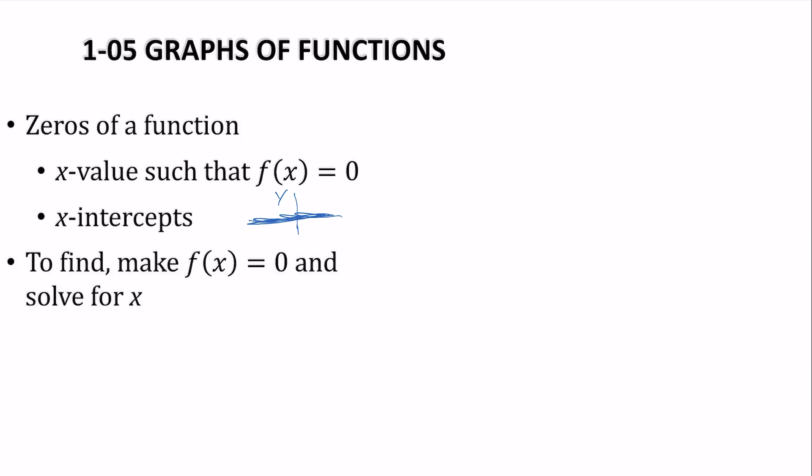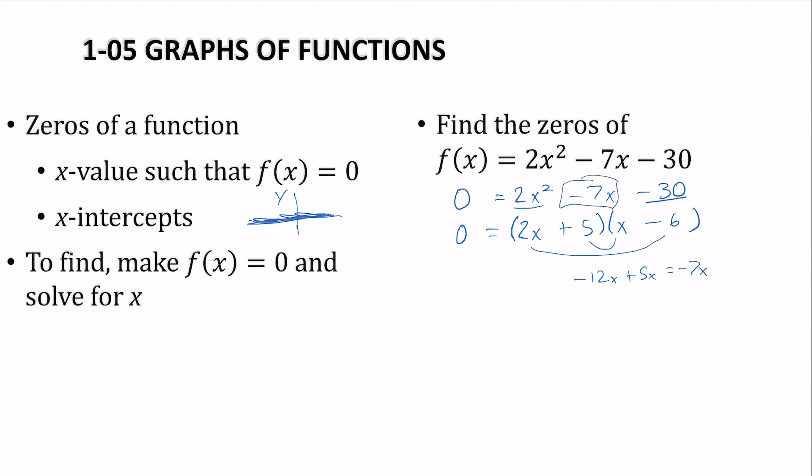So to find the zeros, you make your function equal to zero, and you solve for x. So let's find the zeros of this function. So we'll make the function equal to zero, and we'll solve for x. It's quadratic, so maybe we could factor. Times what makes 2x squared would be 2x and x, and what times what makes negative 30? Might be 5 and negative 6. Let's check that. That would be negative 12x plus 5x is negative 7x. That is the middle, so that works.